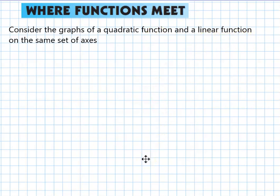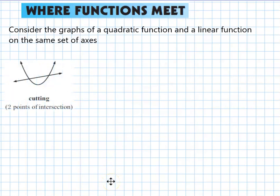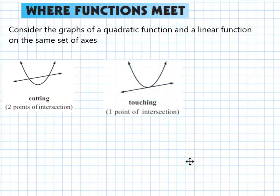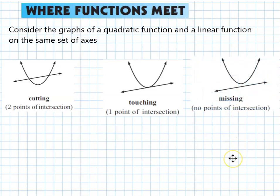Now there are three ways a straight line can interact with a quadratic curve. We can either have the line cutting through the curve at two points, we could have the line touching, therefore being a tangent at one point on the curve, or thirdly we could have the line not interacting or intersecting at all with the function.